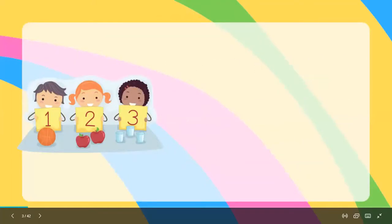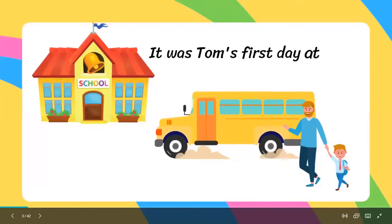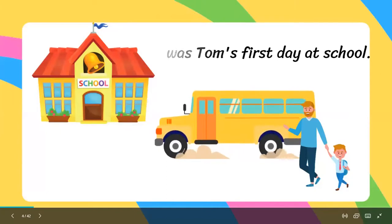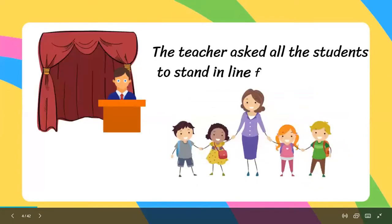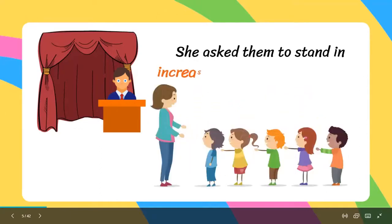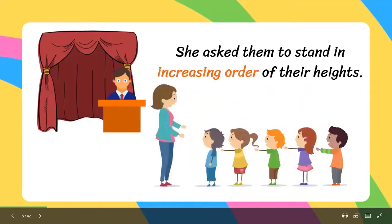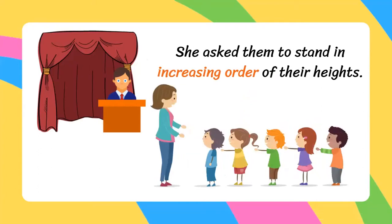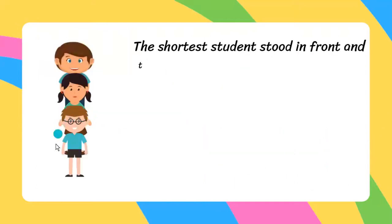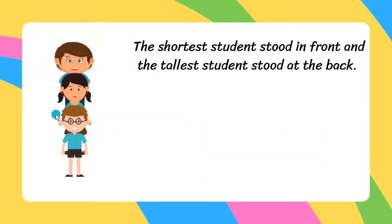It was Tom's first day at school. The teacher asked all the students to stand in line for the assembly. She asked them to stand in increasing order of their heights — the shortest student stood in the front and the tallest student stood at the back.